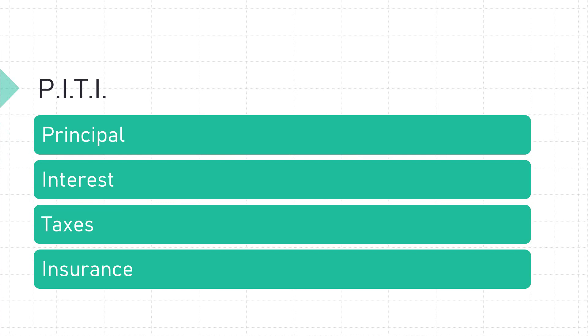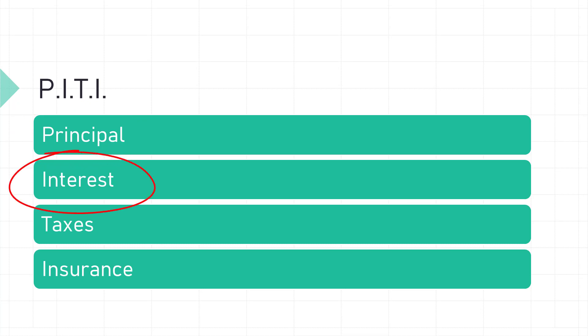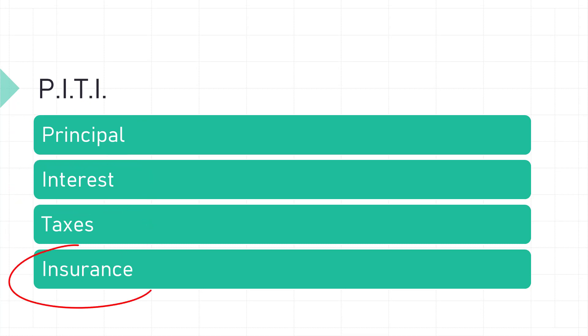Your monthly mortgage payment is made up of four components: principal, interest, taxes, and insurance — P-I-T-I.